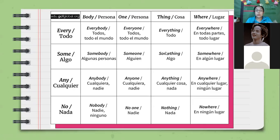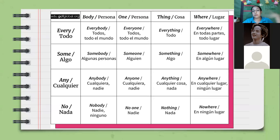When you talk about things, you use 'everything' — 'todo.' 'Something' refers to only one thing — 'algo.' 'Anything' means 'cualquier cosa.' 'Nothing' means 'nada.' When you talk about places, you use 'everywhere' — 'en todas partes, todo lugar.' 'Somewhere' means 'en algún lugar.' 'Anywhere' means 'en cualquier lugar.' 'Nowhere' means 'en ningún lugar.' These are the indefinite pronouns.